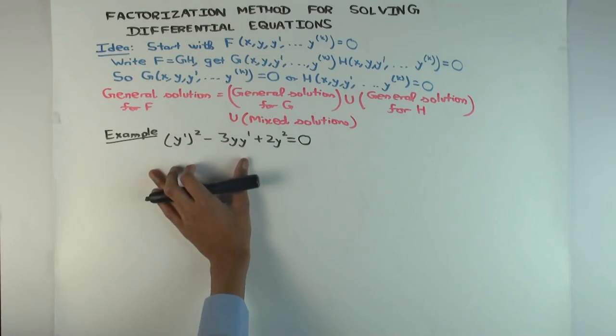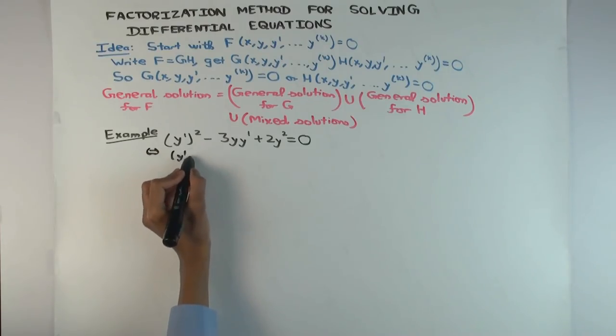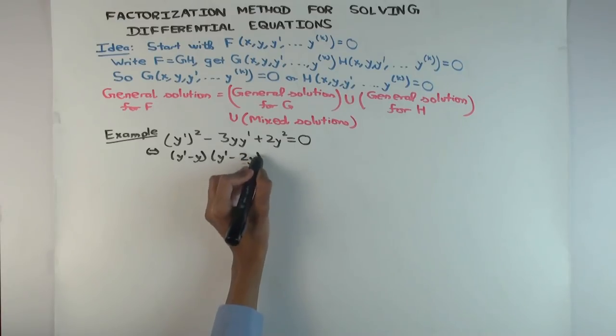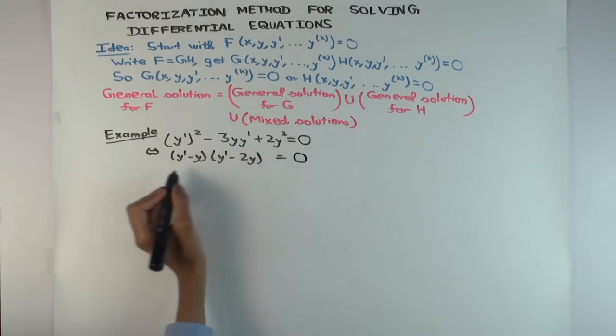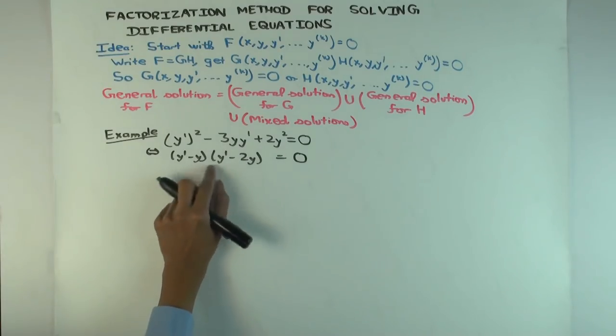Here's a differential equation for you, maybe you've seen this before. (y')² minus 3yy' plus 2y² equals zero. So it's already in the form where everything's on one side, that's good. Now can you factor this for me? y' minus y times y' minus 2y.